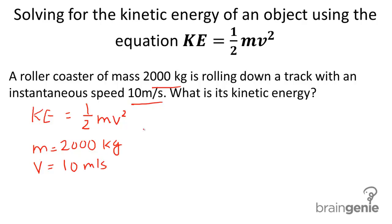Once we plug this into our equation, we get KE equals one half times 2,000 times 10. That gives us a total of 100,000 joules, or 1 times 10 to the 5th joules, depending on how you want to write it.